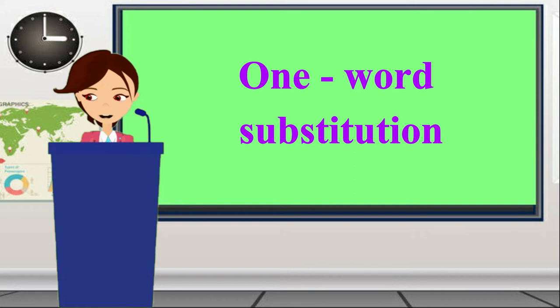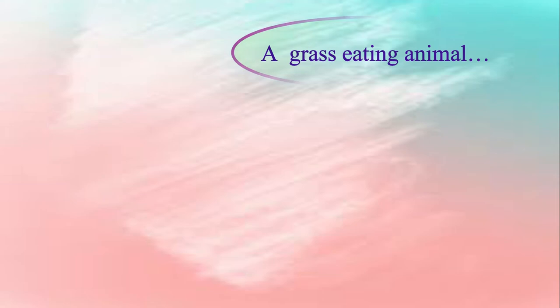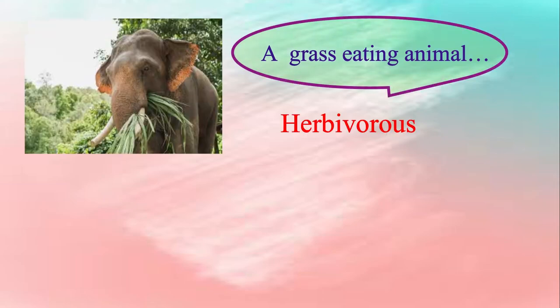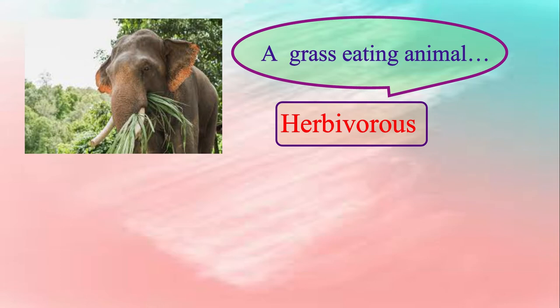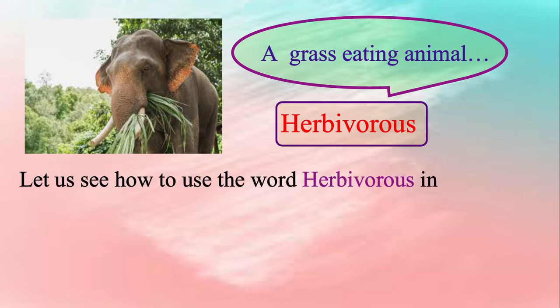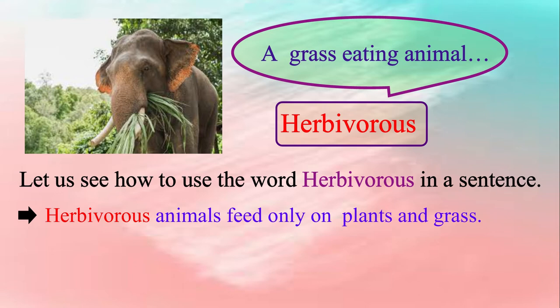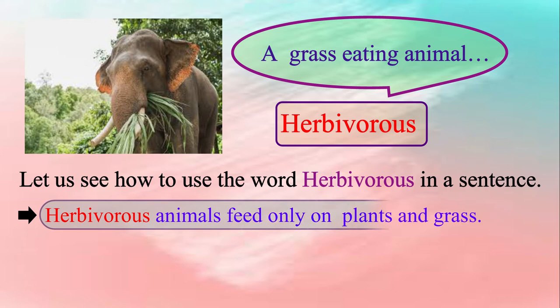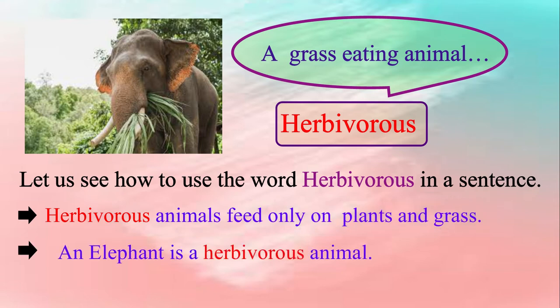Let's see the first group of words. A grass-eating animal, or we can simply say herbivorous. Herbivores are animals whose primary food source is plant-based. Many herbivores have special digestive systems that let them digest all kinds of plant matter including grass. Let us see how to use the word herbivorous in a sentence. Please repeat after me: Herbivorous animals feed only on plants and grass. An elephant is a herbivorous animal.